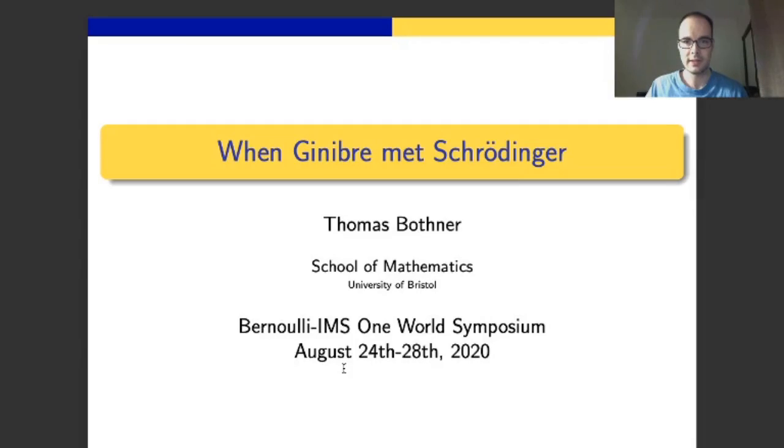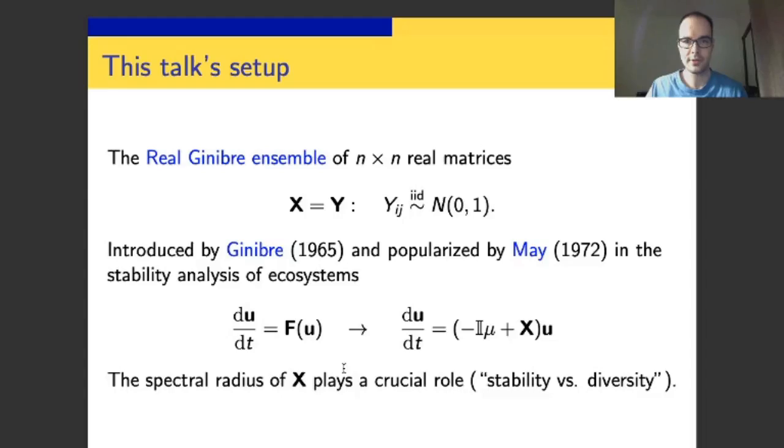I will show you now a few details of our work. First, the setup. We are working with real Ginibre matrices, n by n square real matrices, whose entries are IID copies of standard normal random variables. No symmetry imposed. This is the most basic real non-Hermitian random matrix ensemble you can think of.